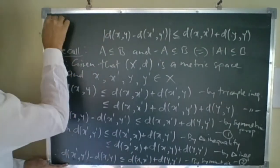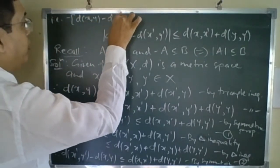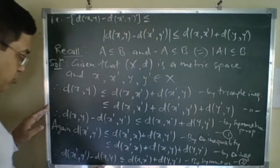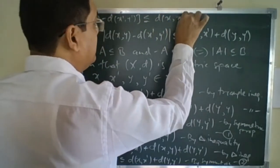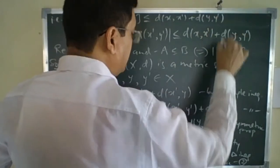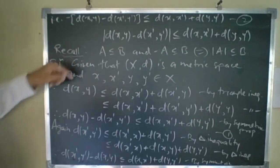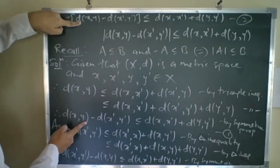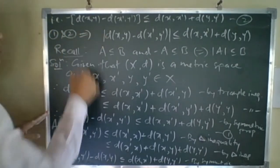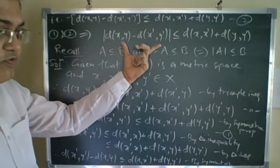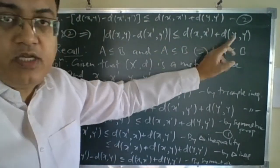Using the result that A ≤ B and −A ≤ B implies |A| ≤ B, we conclude: |D(x,y) − D(x',y')| ≤ D(x,x') + D(y,y'). This completes the proof.